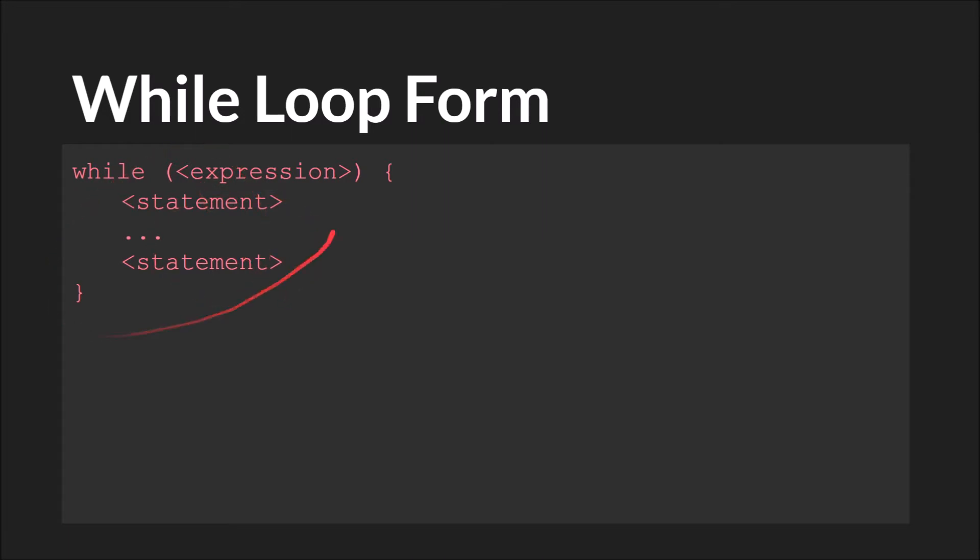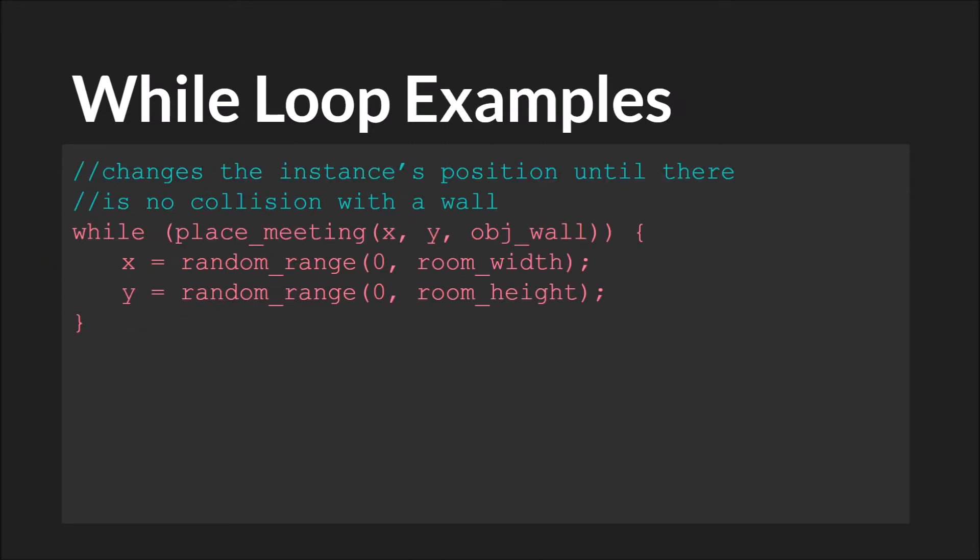A common use of the while loop is checking for a collision at a specific x y coordinates. In this example, we're using the built-in GameMaker Studio 2 collision command, place_meeting, to see if there is a collision with object wall. And if there is, we're just picking a new x and y position at random, somewhere between zero and the room width, and zero and the room height.